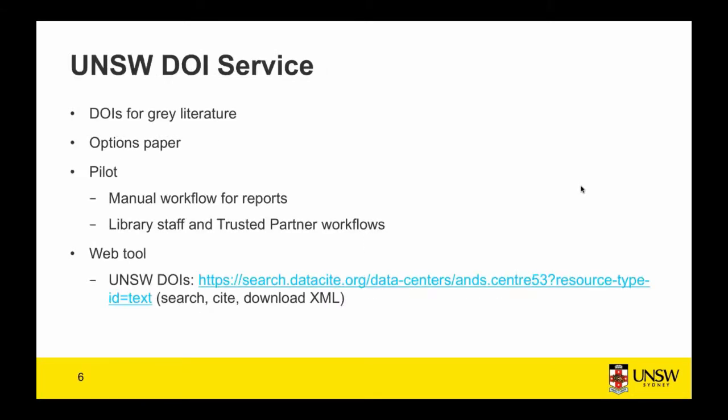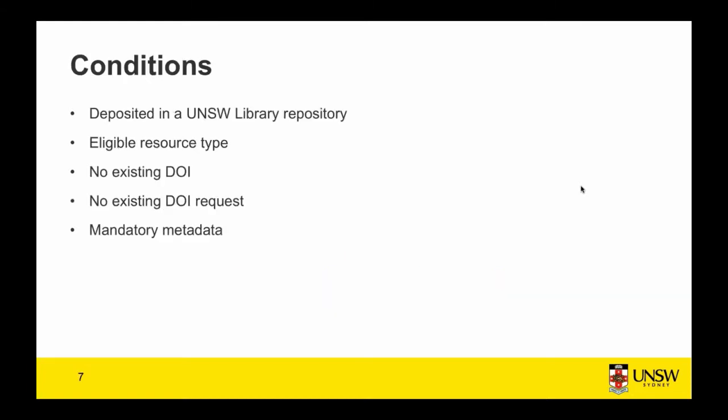In the latter half of last year we presented an options paper to the library and went ahead with a pilot, which involved a manual workflow for reports to start with. We had workflows for both library staff and trusted partners to mint DOIs. We then moved on to implement a web tool, and at the link on screen you can look at the DOIs minted by that service. We now have about 330 DOIs minted for grey literature.